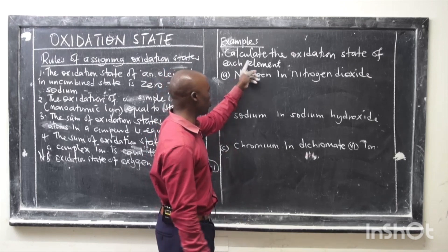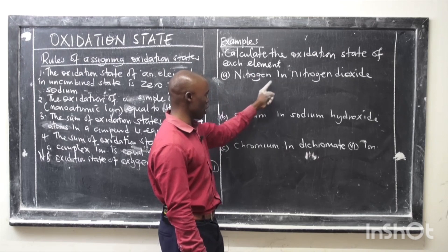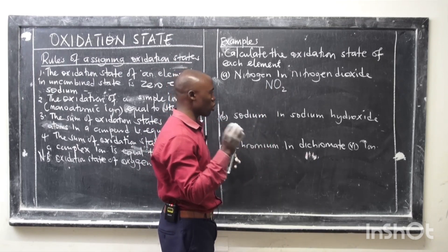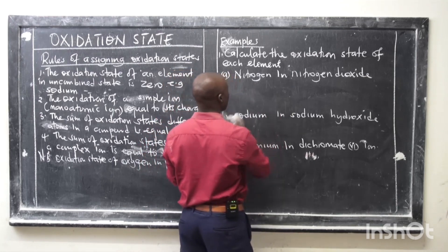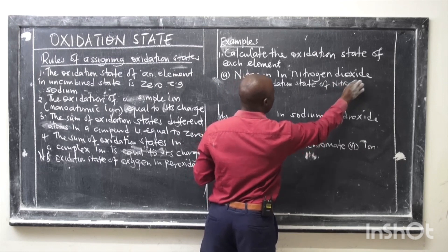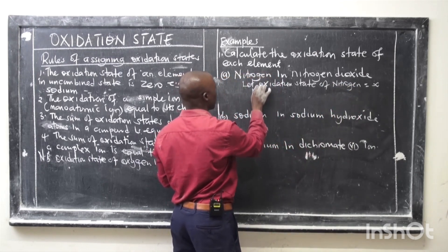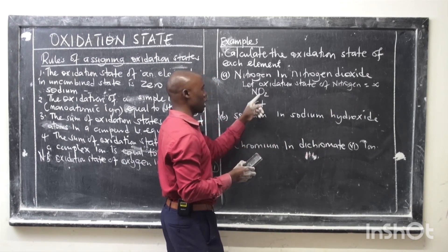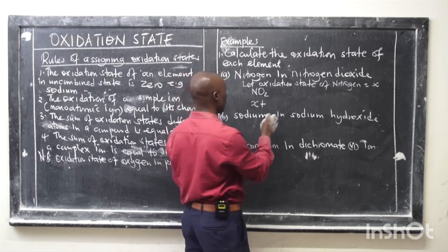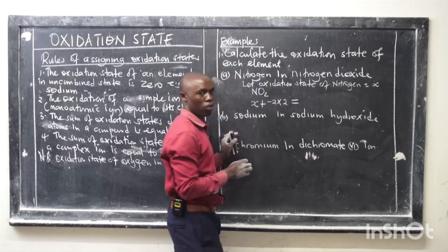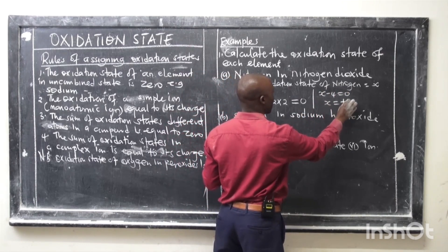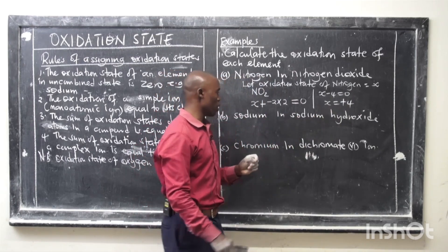Example one: calculate the oxidation state of nitrogen in nitrogen dioxide (NO₂). Let the oxidation state of nitrogen be X. Nitrogen dioxide is NO₂, so we write: X + (−2 × 2) = 0, since the overall charge on the molecule is zero. This gives X − 4 = 0, so X = +4. Therefore, the oxidation state of nitrogen in NO₂ is positive four (+4).